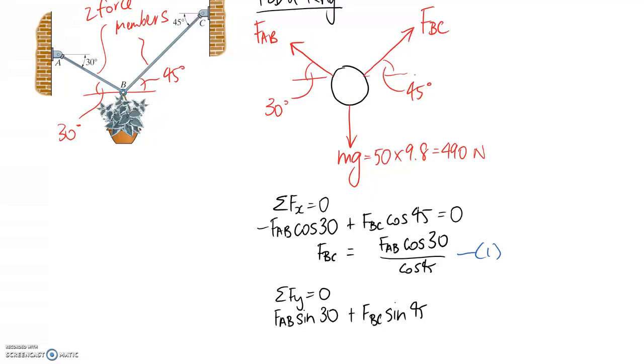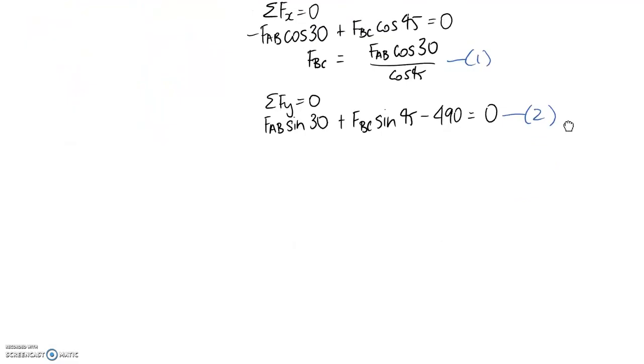The y component of FBC is also going up so it's positive and we take the sine side of the triangle and we've got this force here, the weight of the flower acting down, so it goes in as negative. So this becomes equation 2 and we have the same two unknowns across equation 1 and 2 so it just becomes a case of solving them simultaneously which I've decided to do with substitution.